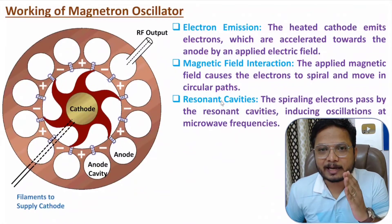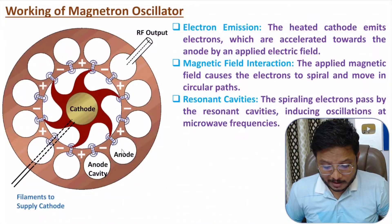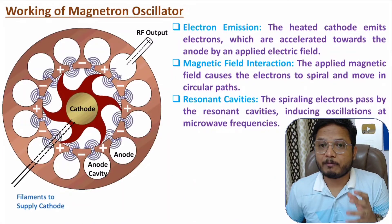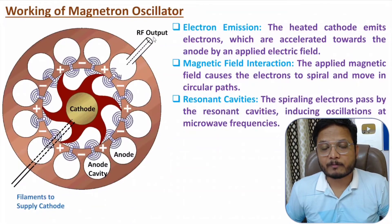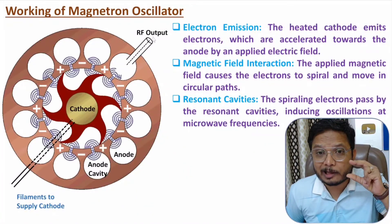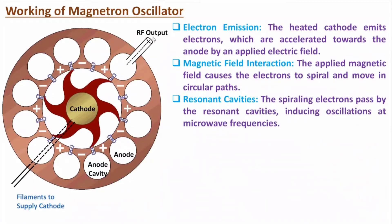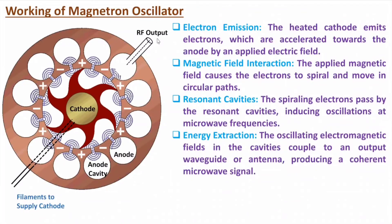The resonant cavities are 180 degrees out of phase with adjacent anode cavities, generating an electric field that forms electromagnetic oscillations, producing microwave frequencies. Those generated microwave frequencies are taken from the RF output, which can be connected with a coaxial loop or waveguide — the coaxial loop can also act as an antenna. Energy extraction is done using a waveguide or antenna to produce the microwave signal at the output.